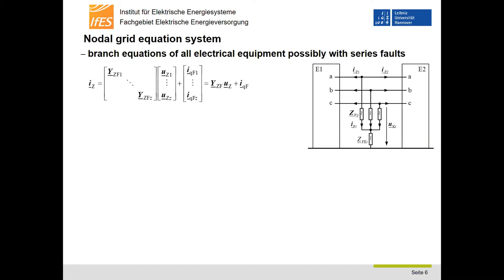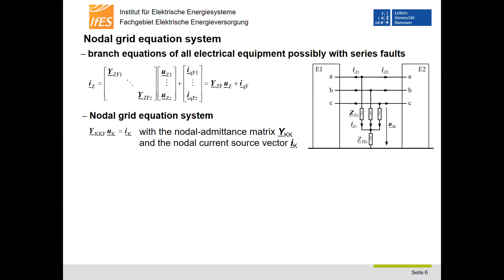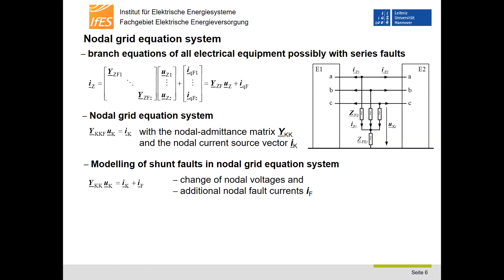A nodal grid equation system can easily be formulated without using topological tools like trees and meshes, only by using the nodal current equations, the topological rule, and the branch equations of all electrical equipment. The resulting nodal grid equation system consists of the nodal admittance matrix YKK, the nodal voltage vector UK, and the nodal current source vector IK. Shunt faults occur at the network nodes and have to be modeled in the nodal grid equation system.